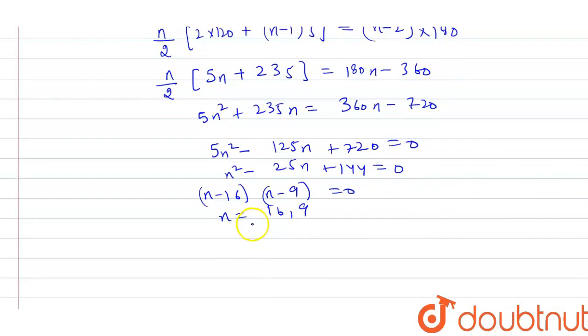We got the number of sides as 16 or 9. If the value of n is 16, then the 16th angle is 120 + 15(5) = 195 degrees, which is greater than 180 degrees. So it is not possible.